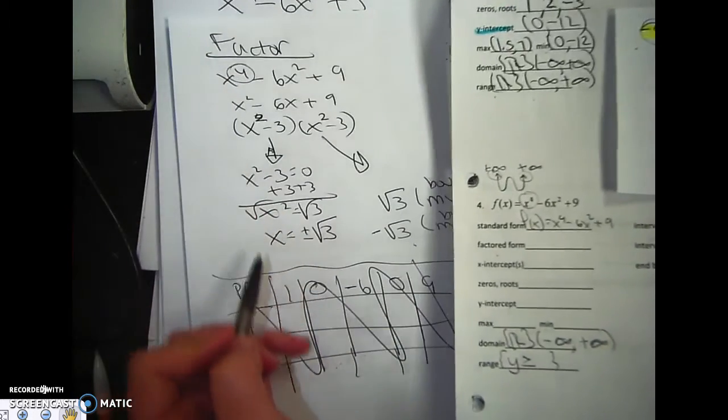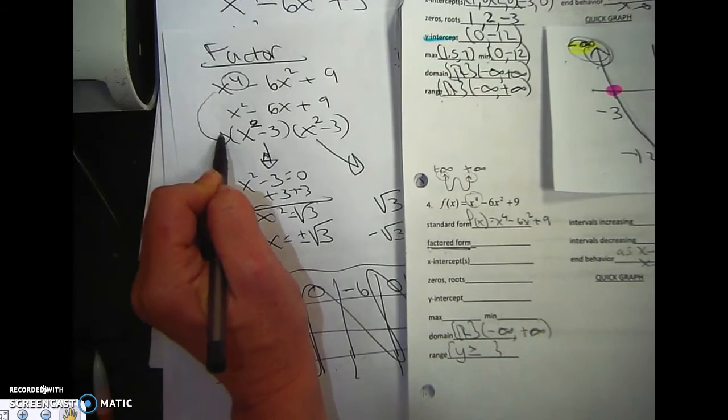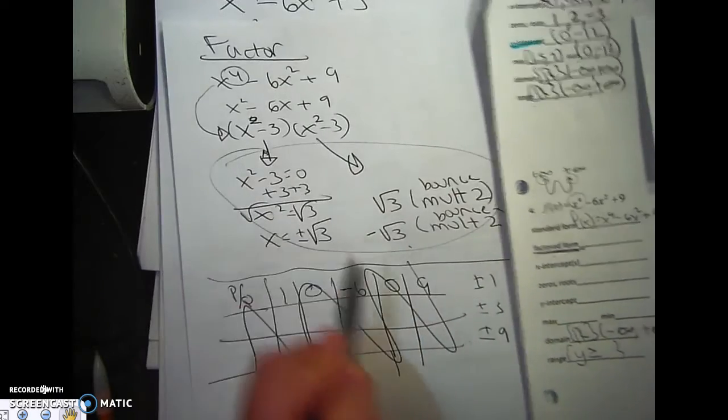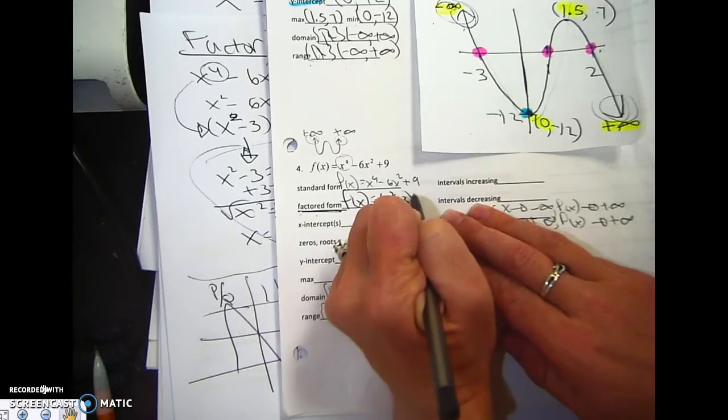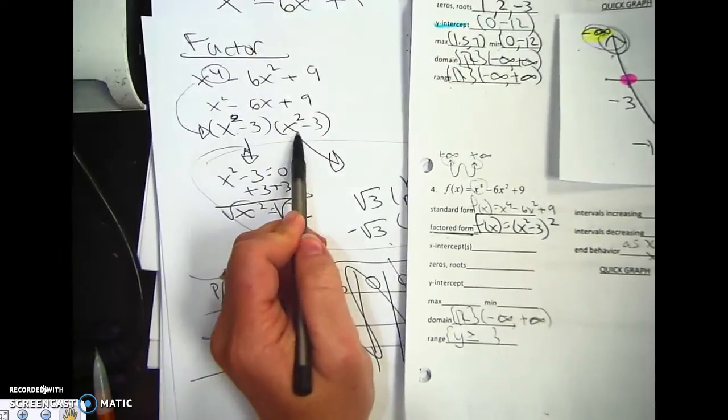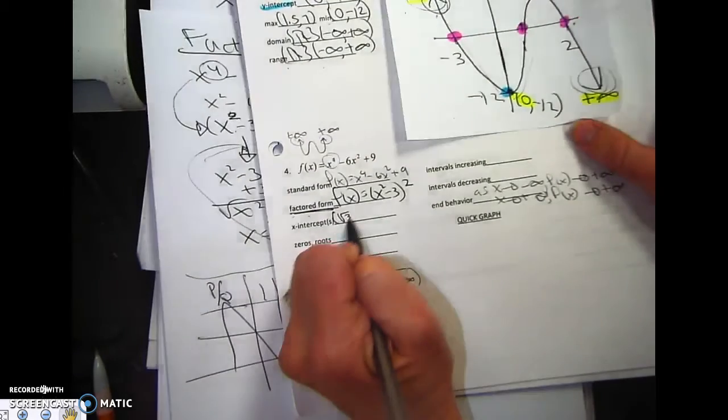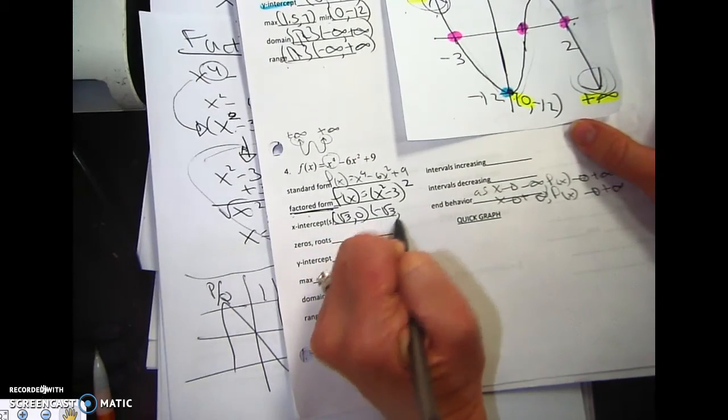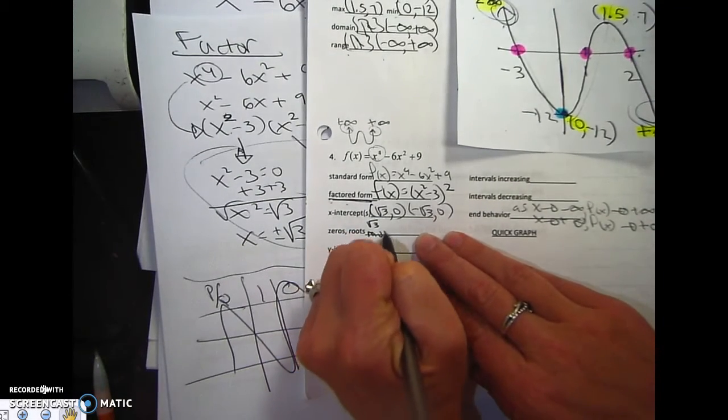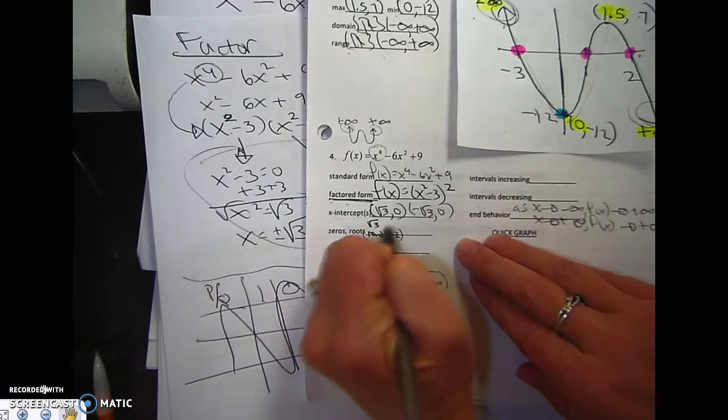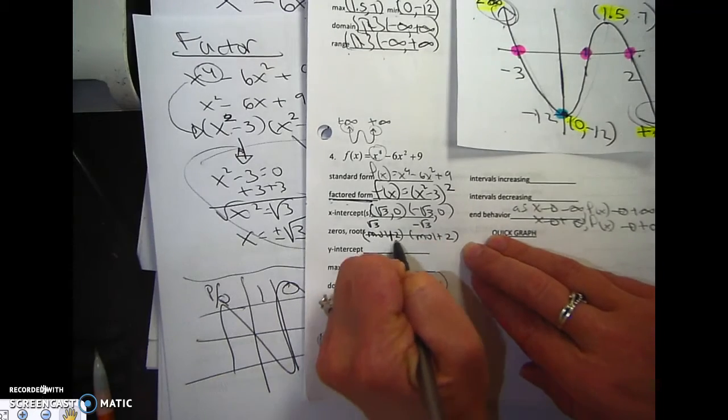Let's go back up here. If I'm saying factored form, I do as much as I could to factor. This is solving. So then my answer for factored form is f of x equals x squared minus 3 squared. The x-intercepts are rad 3 comma 0 and negative rad 3 comma 0.